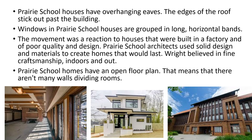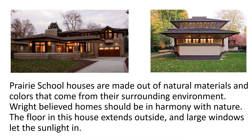Prairie School homes are often grouped in long horizontal bands. The windows run horizontally, like those bands of windows in the building on the right. The movement was a reaction to the closed-off homes of that era — they featured big open spaces inside, often made out of natural materials to help them blend in with their surroundings. They even made use of materials local to that area.